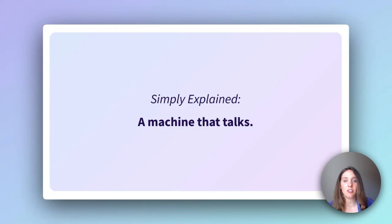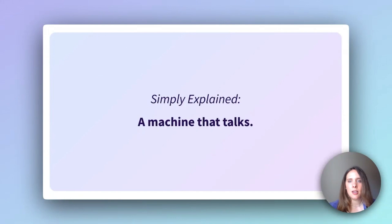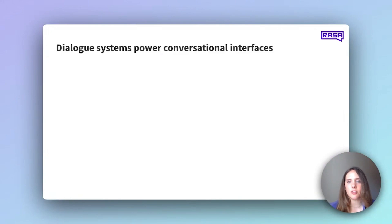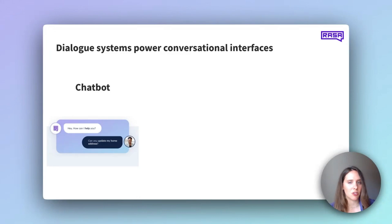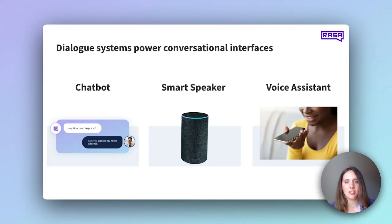Many brands use conversational AI platforms like Rasa to build and maintain these systems quickly and easily. Dialogue systems like CALM power conversational interfaces. A conversational interface is the medium for the conversation — the device that you're actually chatting with. No doubt, you've probably already chatted with a few conversational interfaces like a customer service chatbot, a smart speaker, or a voice assistant.